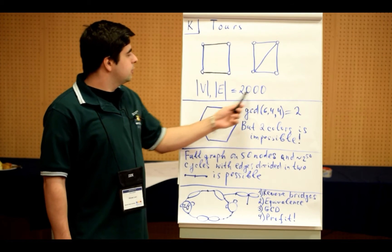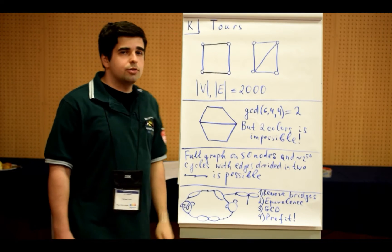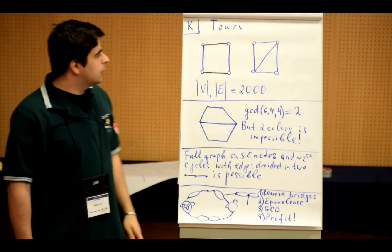The constraints are pretty tough, so there are at most 2000 nodes and at most 2000 edges. So there are a lot of graphs possible, actually.